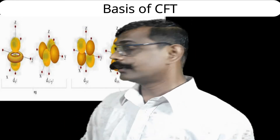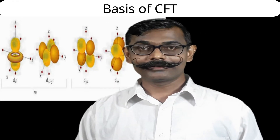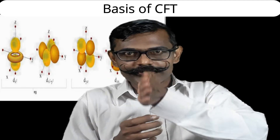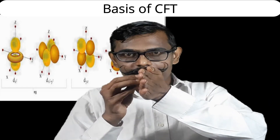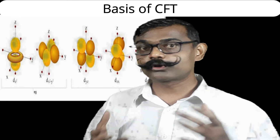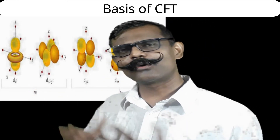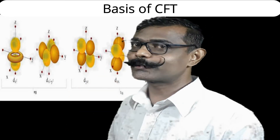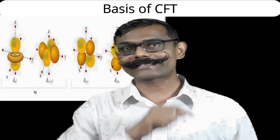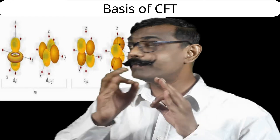The third orbital is the dyz orbital. If we consider the y-axis towards you and the z-axis upward, this defines the y-z plane. The lobes will be in between the y and z-axes — yellow color lobes between y and z, and the brown color opposite lobes also between y and z. The lobes make a 45-degree angle to both the y-axis and z-axis, so they are in between the axes.